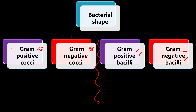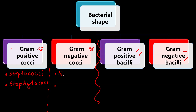For gram positive cocci — spherical bacteria that are violet-colored — the examples include Streptococci and Phylococci. For gram negative cocci, two important members to remember are Neisseria and Moraxella.